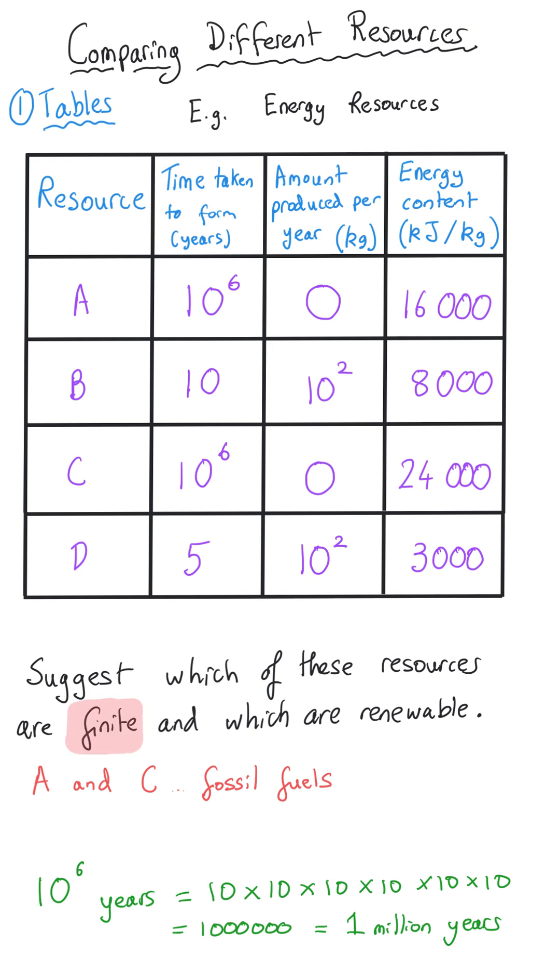And that tallies up if we compare it to the next column along we make very little coal or oil or gas every year and so C could be one of those three. And so could A. If they take a million years to be produced then we're not going to make much at all each year.